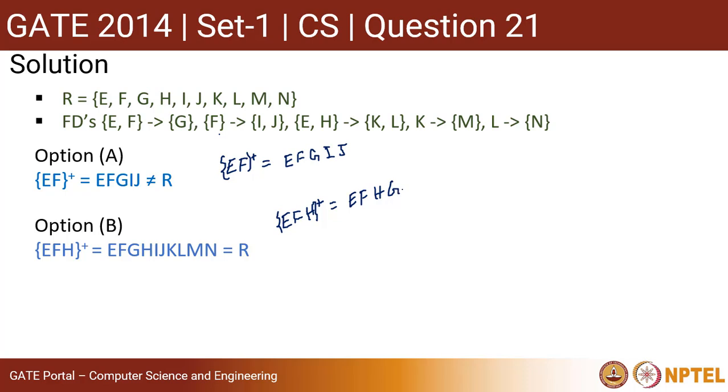Now EF determines G, EF determines IJ, and we have EH determines KL, K determines M, and L determines N.